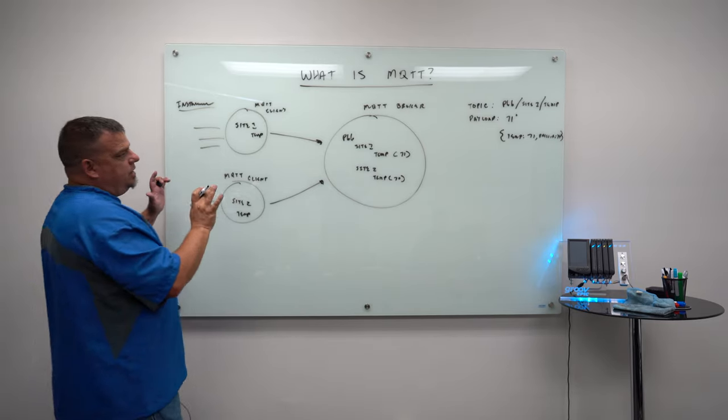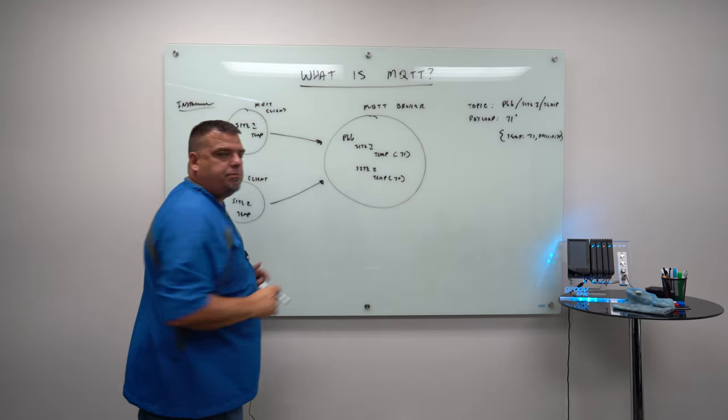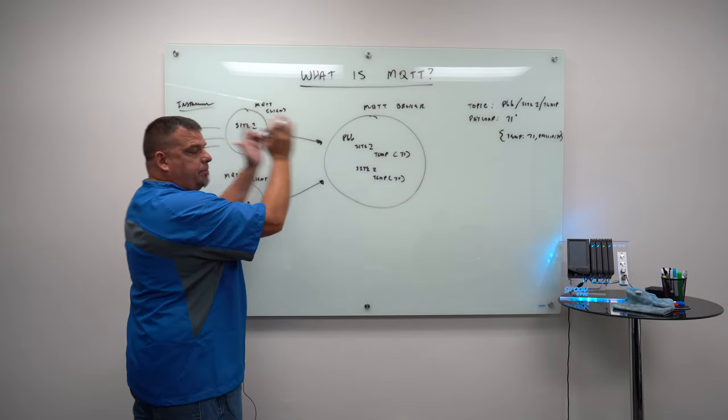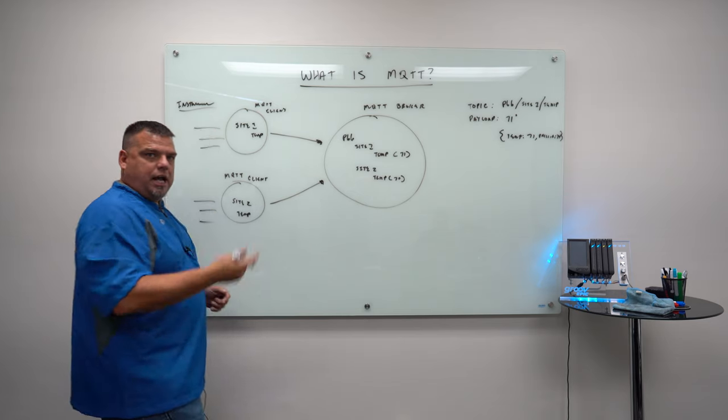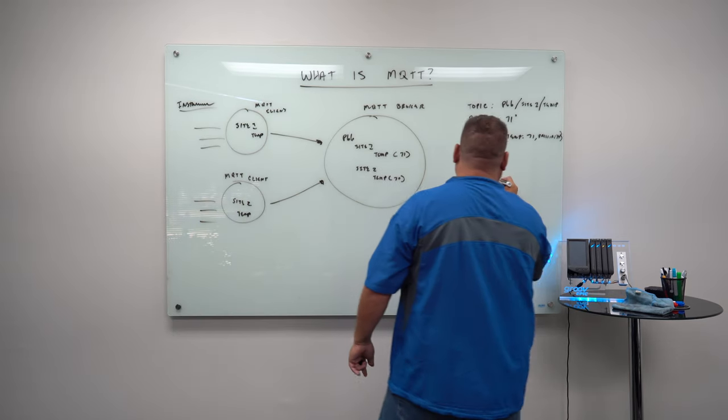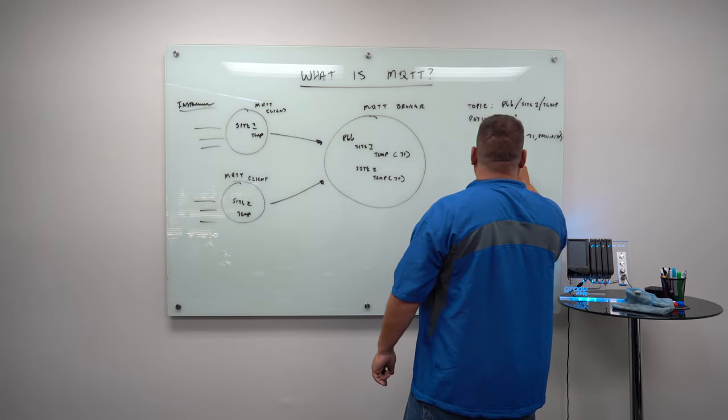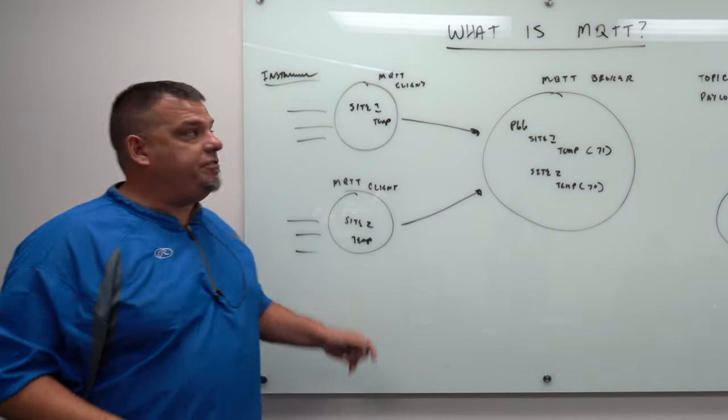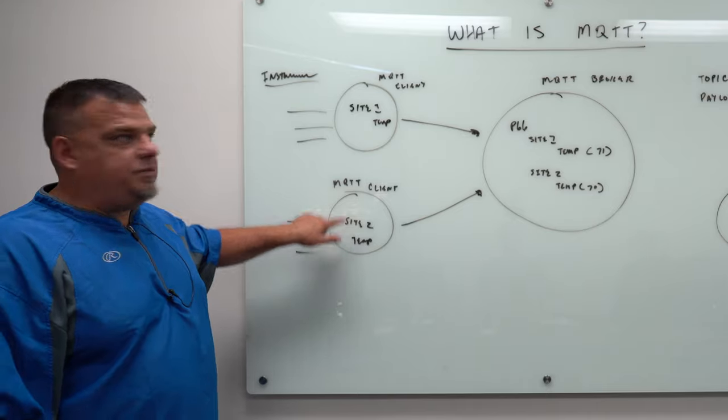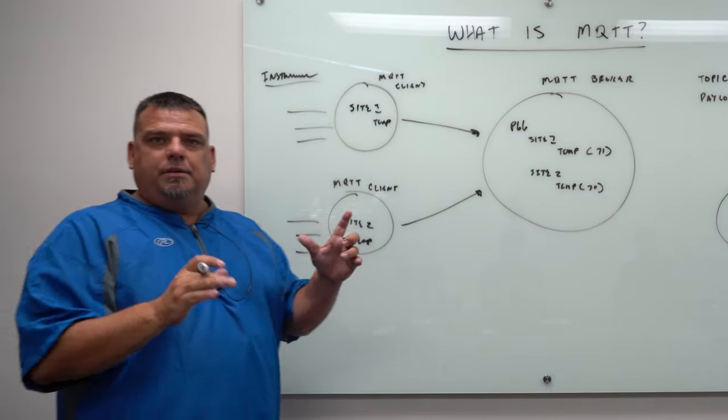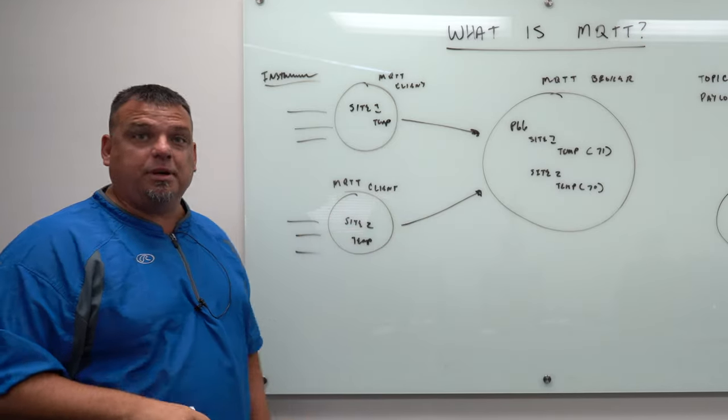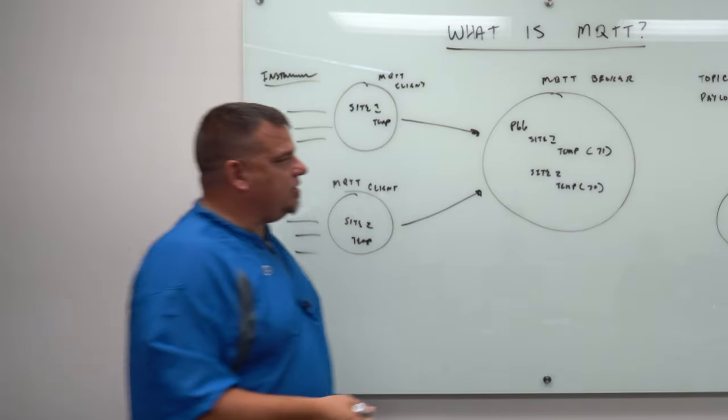That is MQTT client MQTT broker in a nutshell, where the clients are only publishing to the broker. I may add a third MQTT client. And this MQTT client, its primary responsibility is let's say I want to visualize the values of these two temperatures. So I want to be able to navigate to site one and look at its temp, navigate to site two and look at its temp.